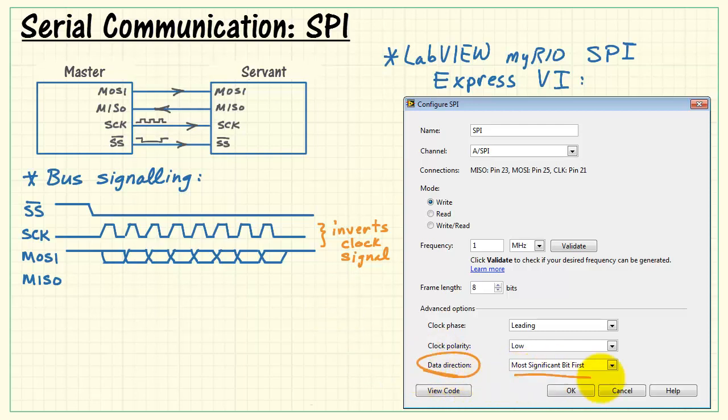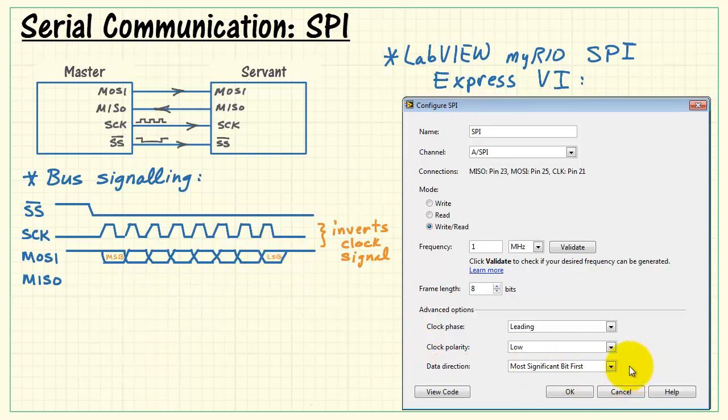Data direction. We can designate either most significant bit first or least significant bit first. Again, with the default, it's MSB first. If your particular peripheral needs it to go the other direction, then you simply select LSB first.